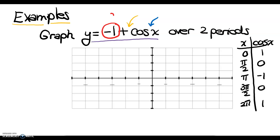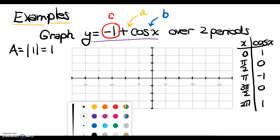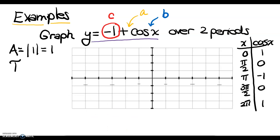So this is my c value, this is my a value, and this is my b value. When I calculate my amplitude, it's the absolute value of a, which is 1. So the amplitude is 1 — from a resting position at y equals 0, the graph goes up by 1 and down by 1 at most. For the period, I calculate 2π over b, and b is 1, so the period remains at 2π.